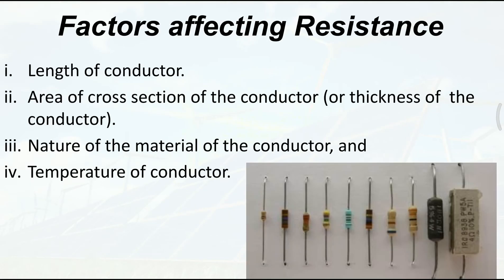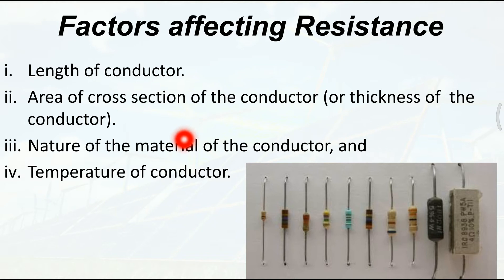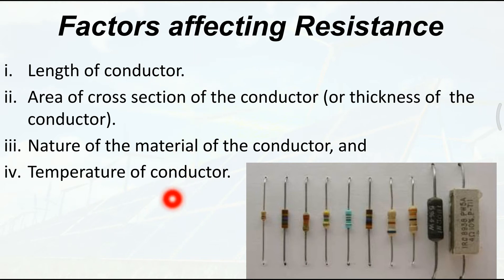What are the factors affecting resistance? Resistors को कौन-कौन से factors affect करते हैं? The first factor is the length of the conductor. Second is the area of cross-section of the conductor. जितनी wire की length ज्यादा होगी, जितनी circuit लंबी होगी, उतना resistance ज्यादा होगा। Cross-section मतलब thickness - उसपे depend करता है। Third is the nature of material of the conductor, और fourth है temperature of the conductor। इन सारी चीज़ों पर resistance rely करता है और affect होता है।